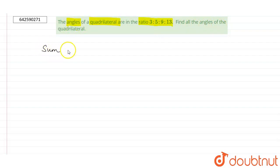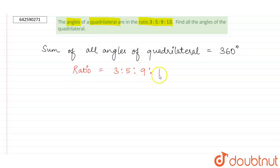We know that sum of all angles of quadrilateral is equal to 360 degree. Now, angles are in the ratio 3 is to 5 is to 9 is to 13. So we can say that the angles are 3x, 5x, 9x and 13x.